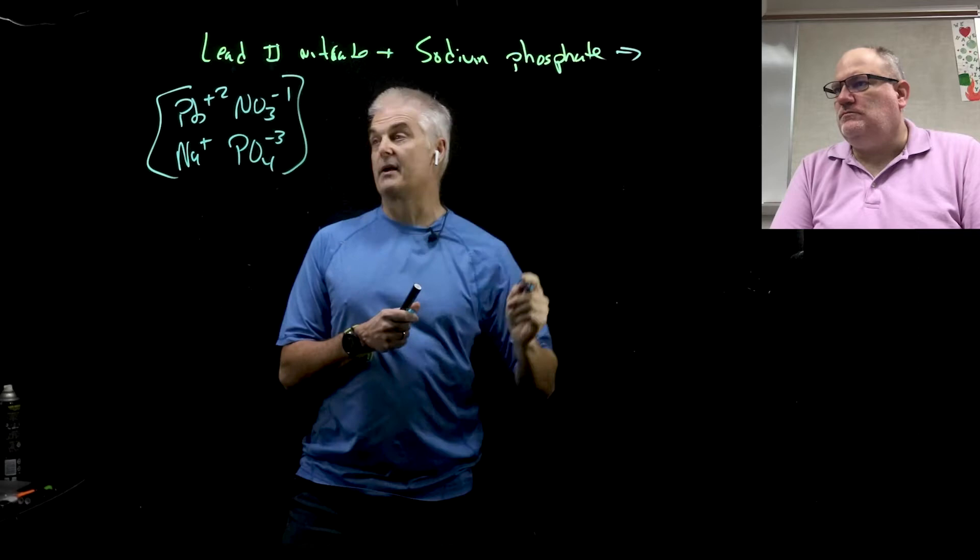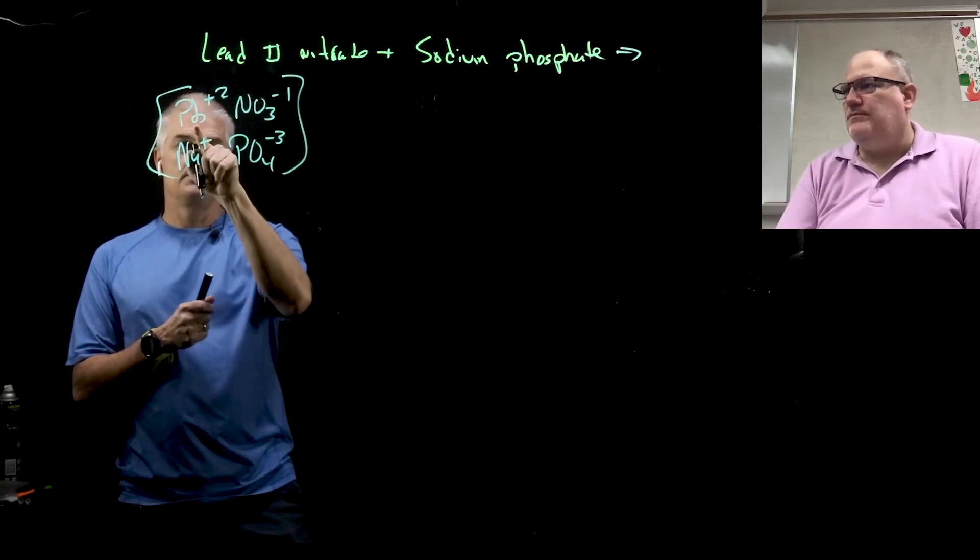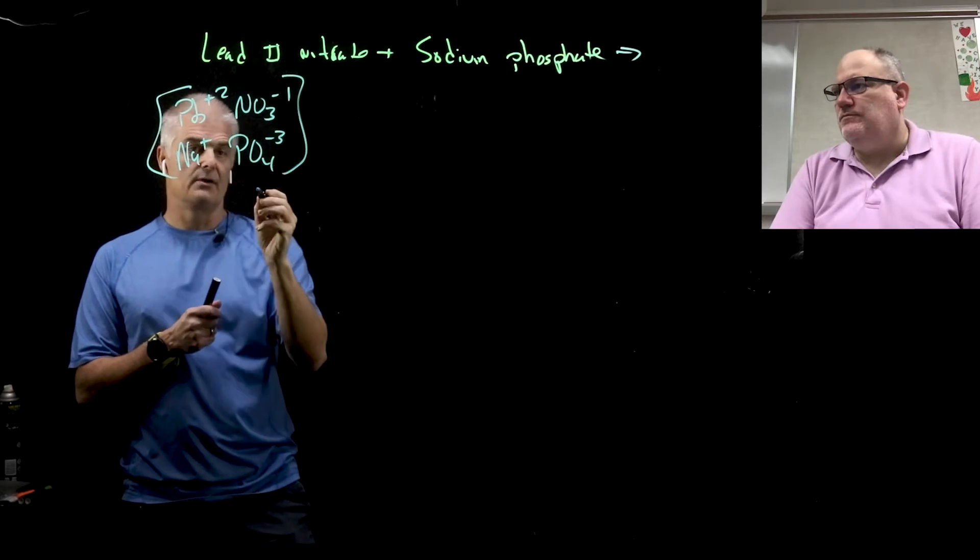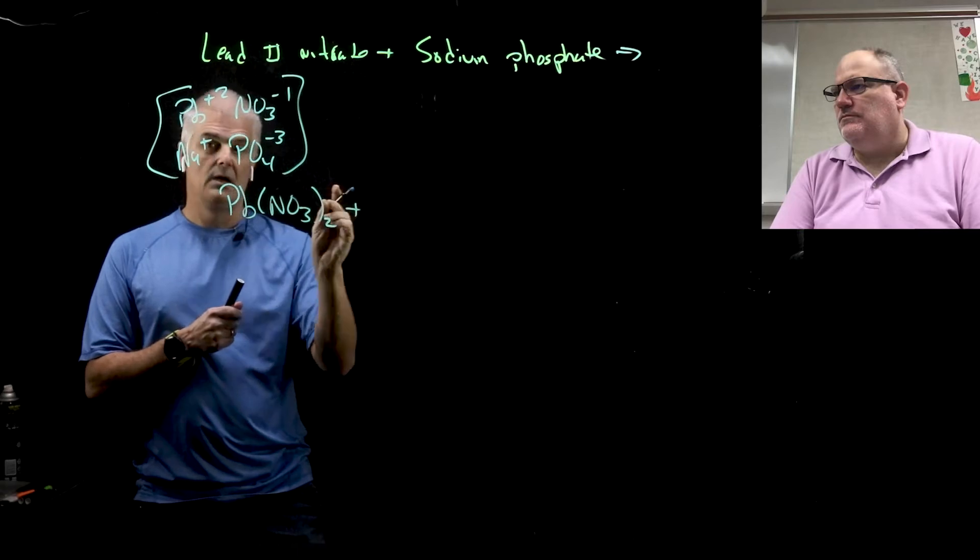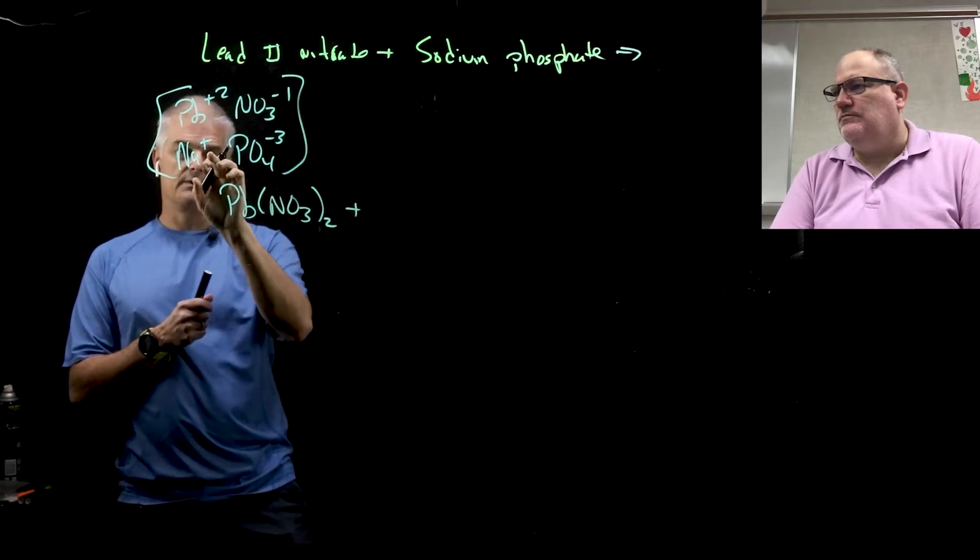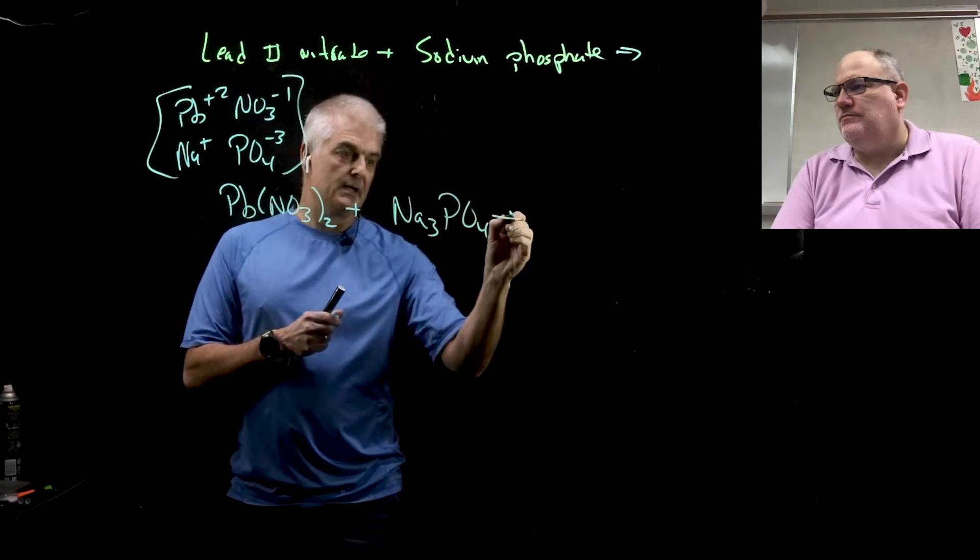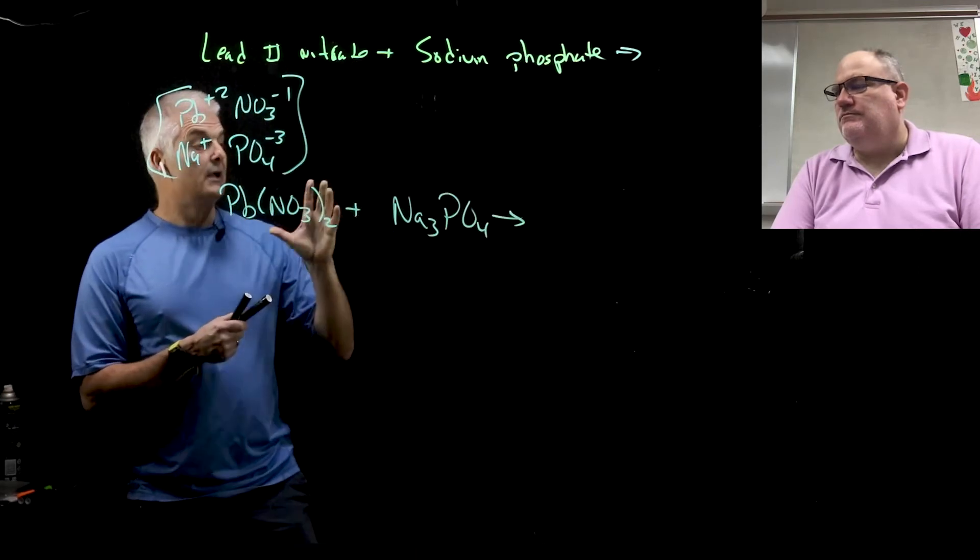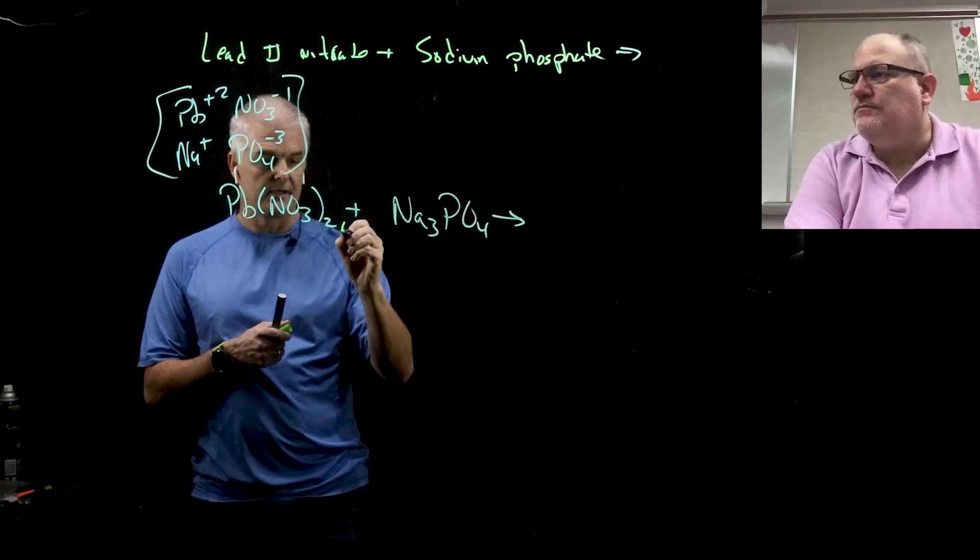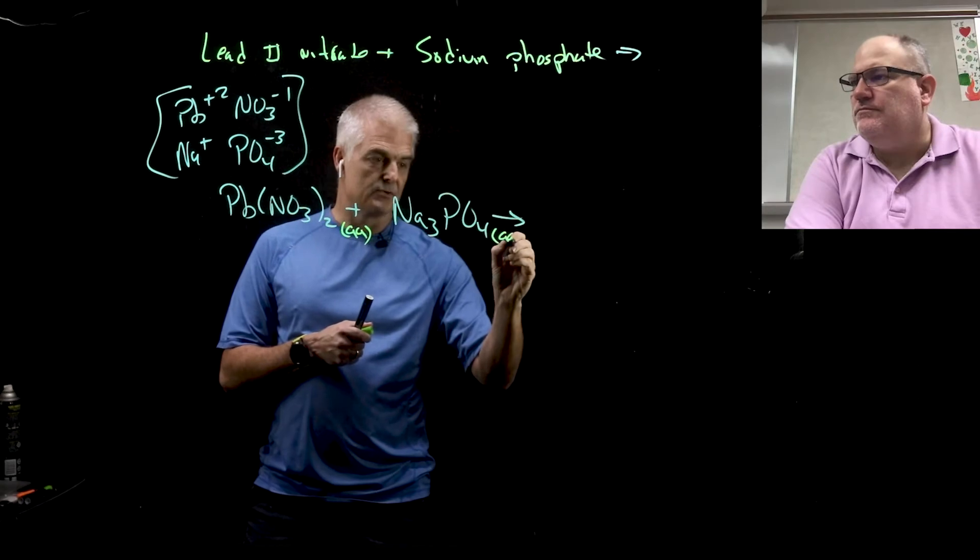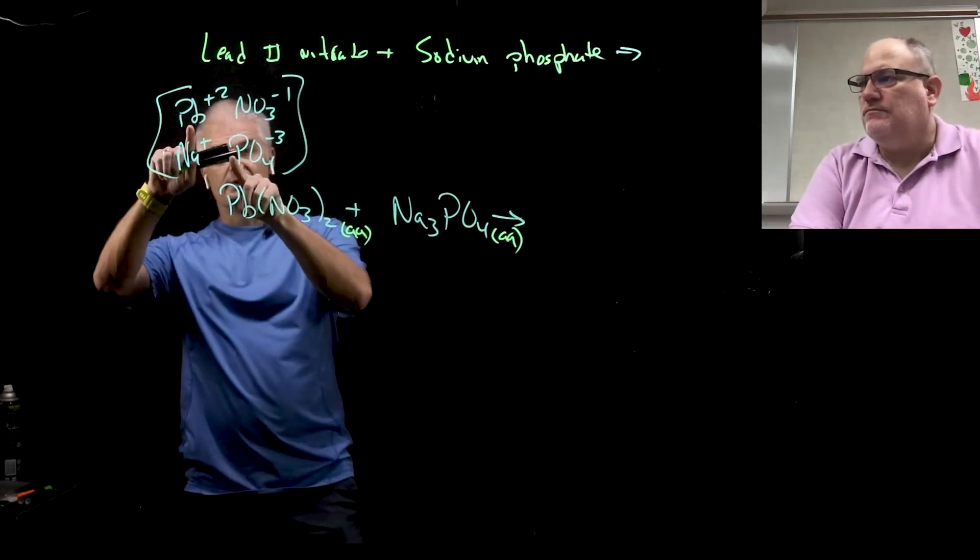We want to build this and then figure out what the products are because we got to swap. Lead(II) nitrate, so Pb 2+ NO3-, that's Pb(NO3)2 plus sodium phosphate, positive 1 negative 3, that's Na3PO4. Now we need to check out our other table, this table of aqs and s's, and it turns out that lead nitrate is aq, and this is also aq, so this reaction could happen.